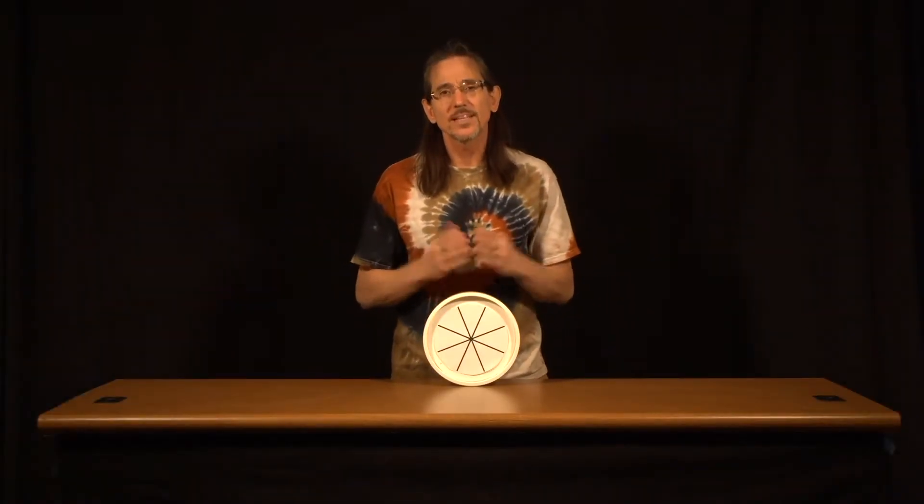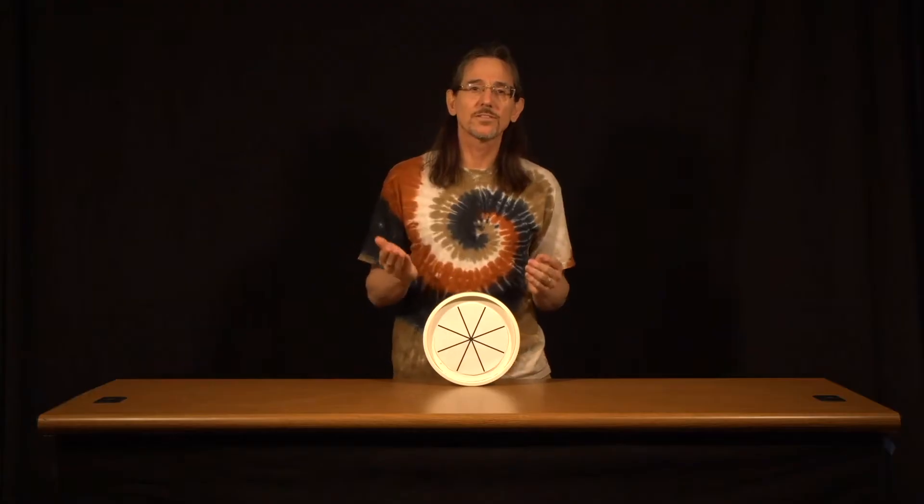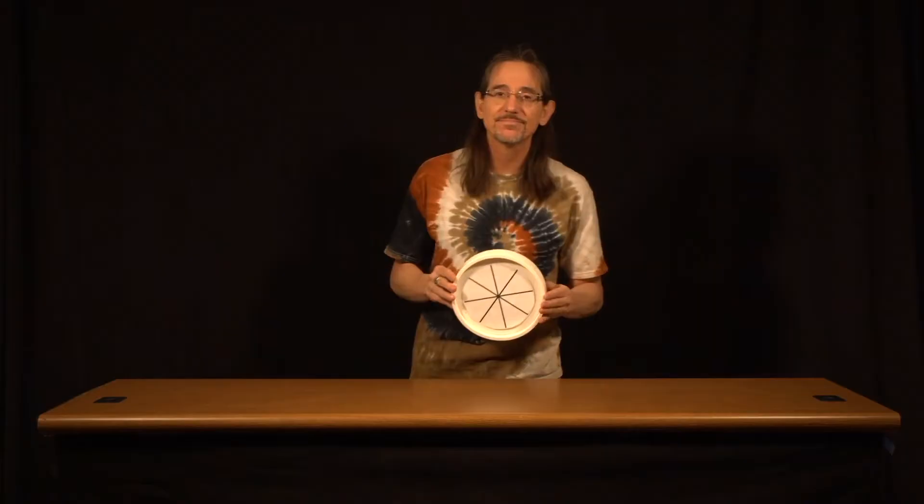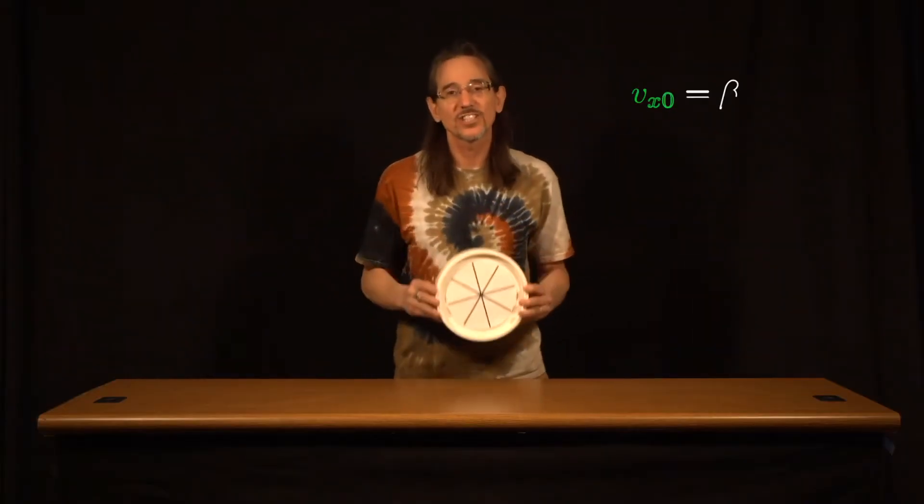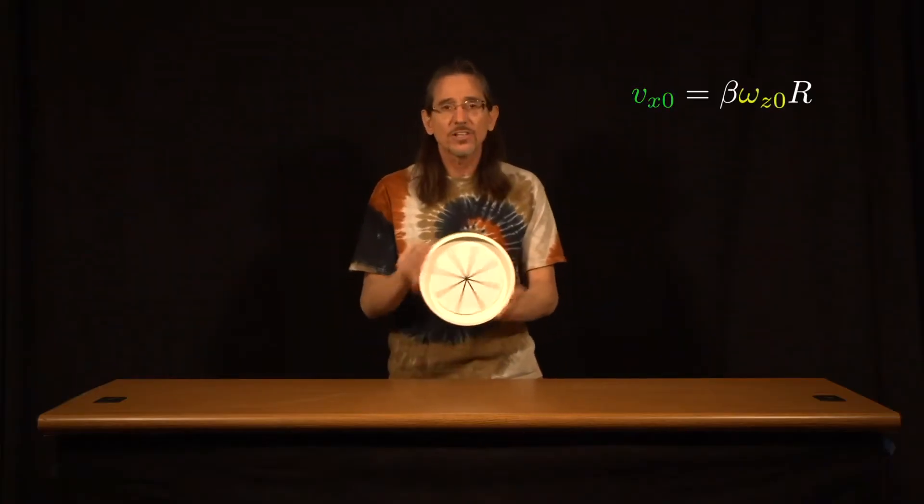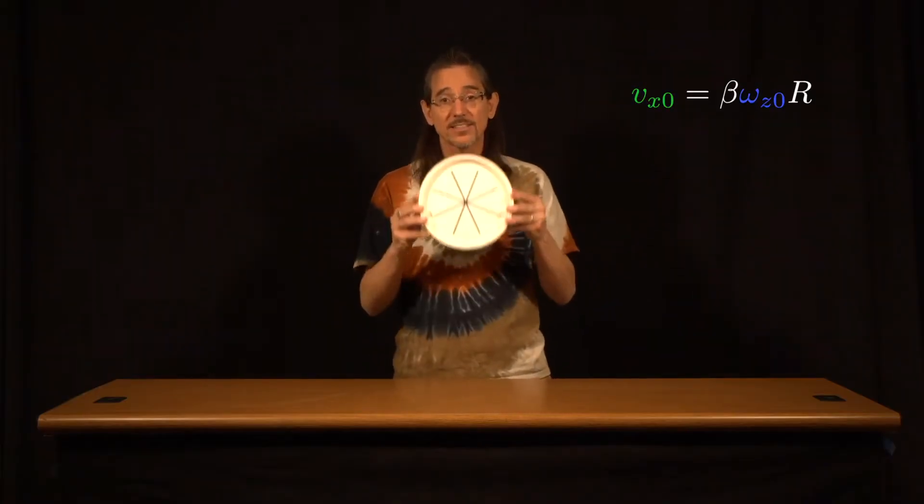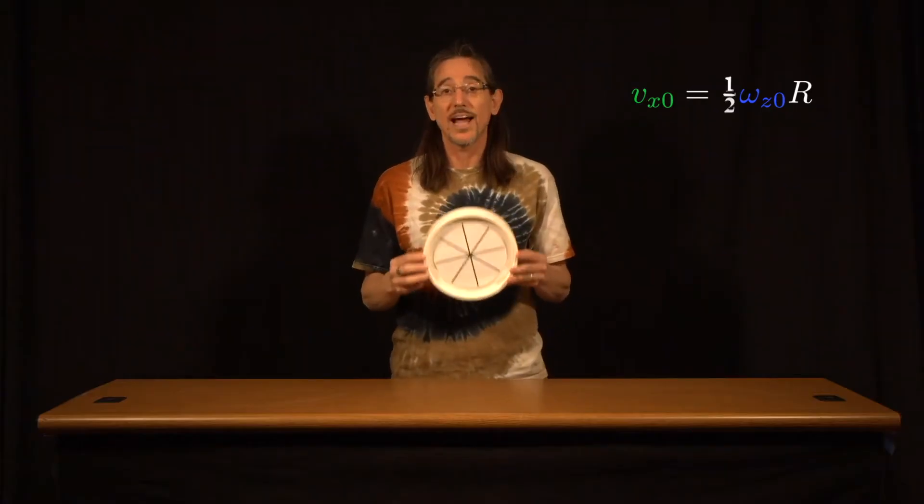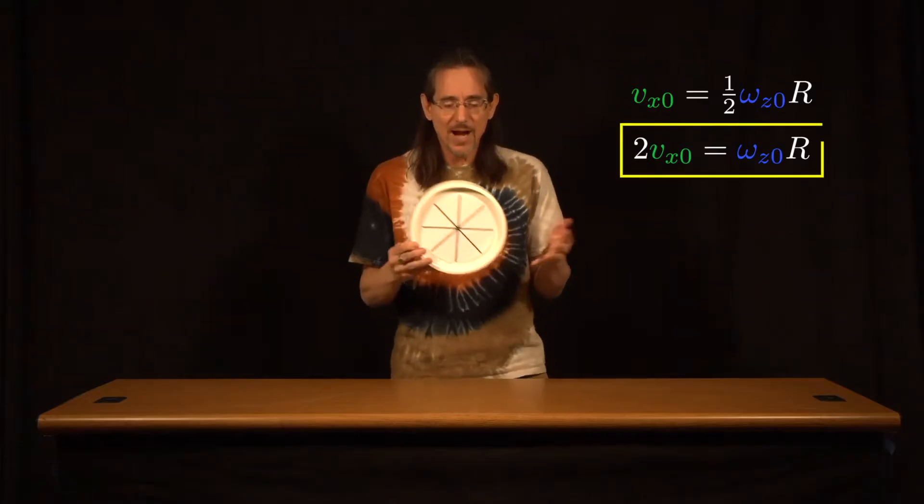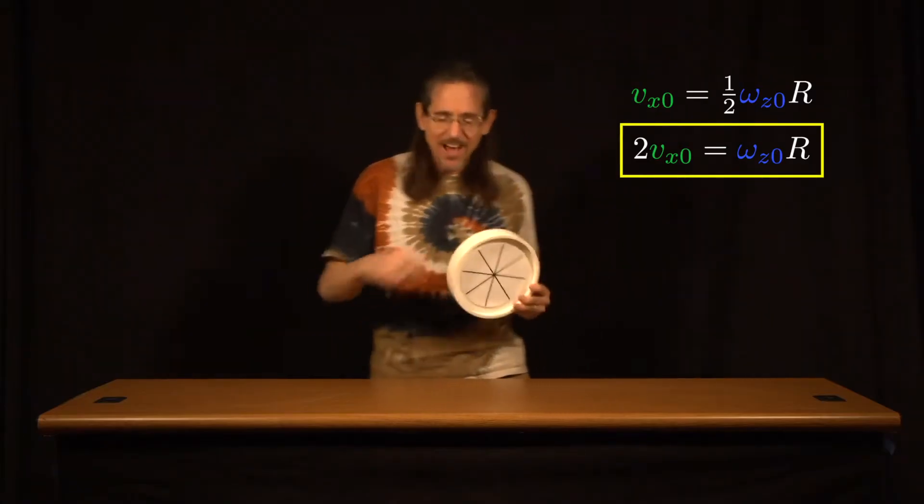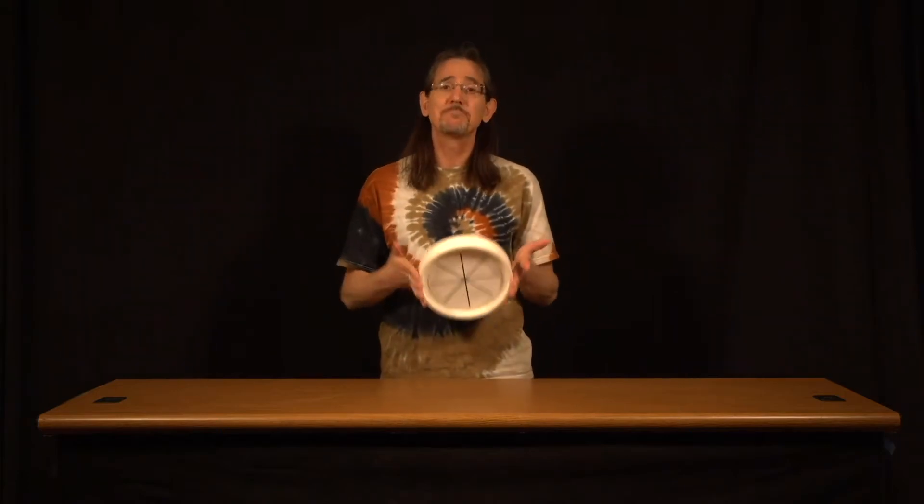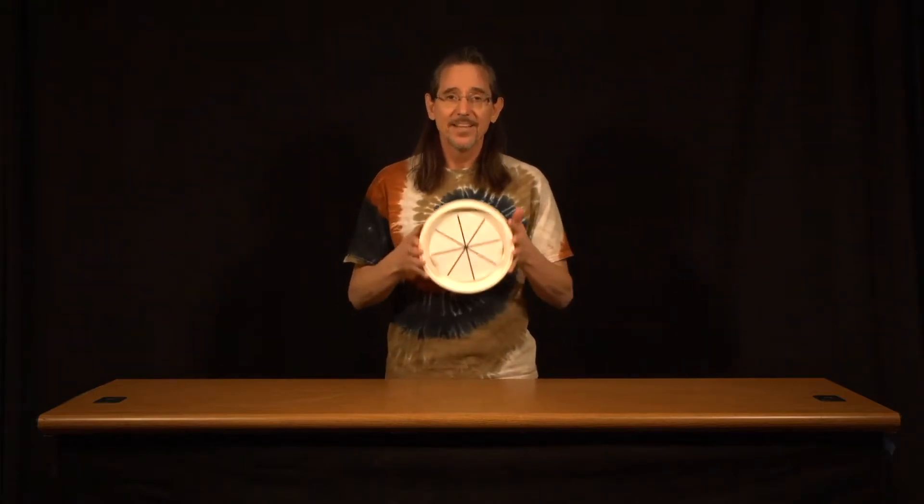Before finishing this video, let's see if we can apply what we've learned to the real world by throwing this disk so that it slides to a stop. We can use the initial condition constraint equation we just derived to determine the relationship between the translational and rotational velocities for a disk if we substitute in the value beta equals one-half. Unfortunately, this doesn't really help us because there's no simple way to accurately adjust the velocities when you're throwing it by hand. It really just comes down to trial and error and perhaps a little luck. Let's see how we do. By the way, this is a fun challenge, so I encourage you to try it at home. But fair warning, it's harder than it looks.